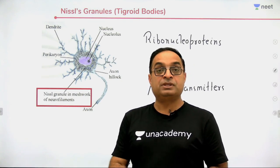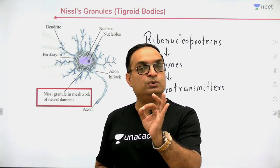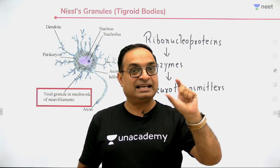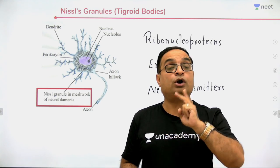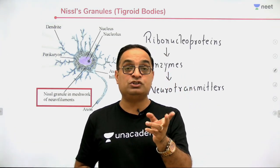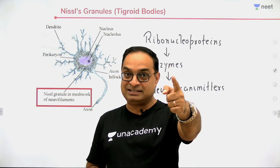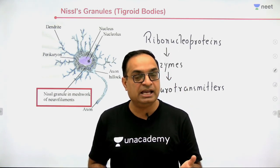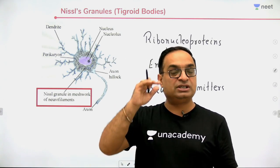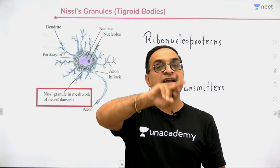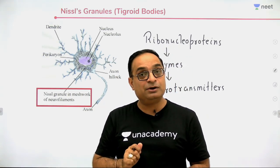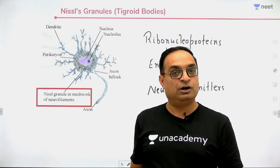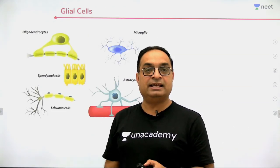Nissl Granules give a gray shade to neurons. When we talk about gray matter in the nervous system, it refers to the collection of cell bodies — that is gray matter. In the spinal cord and brain, the arrangement of gray and white matter is different. White matter is due to the myelin sheath, formed by Schwann cells, which is made of lipids. In the spinal cord: gray matter is inside, white matter is outside. In the brain: white matter is inside, gray matter is outside.